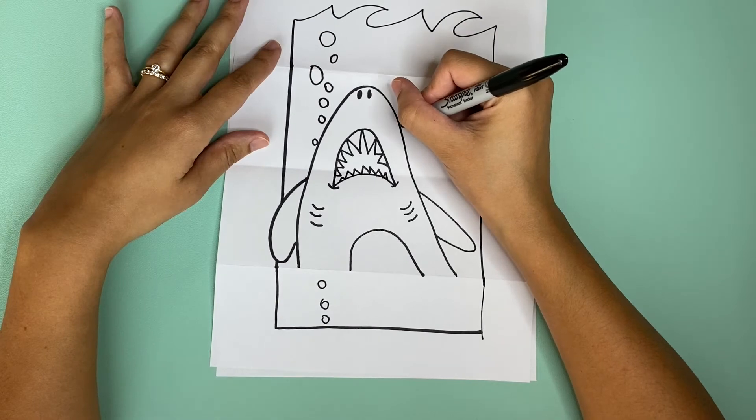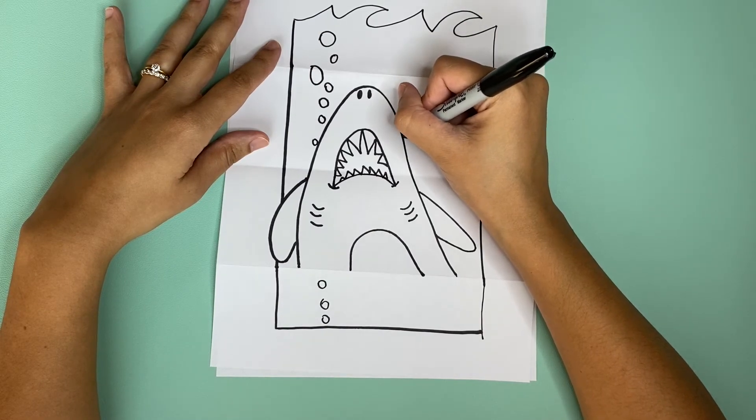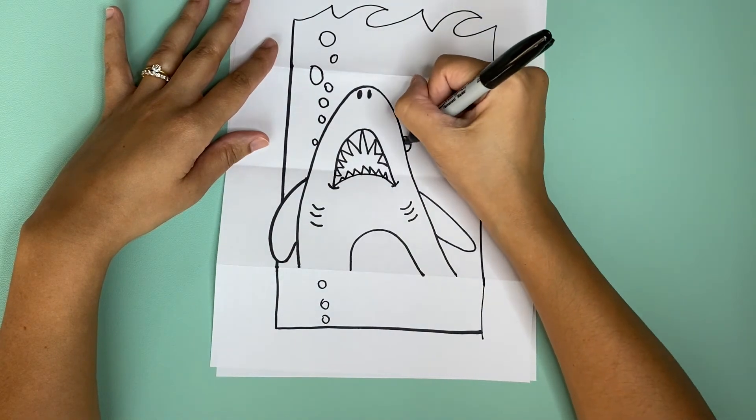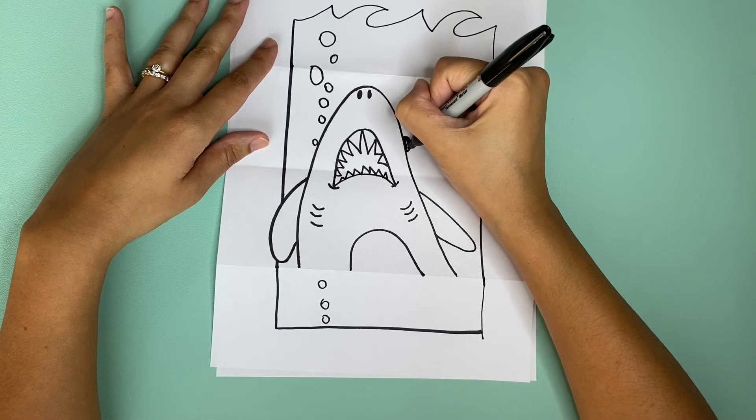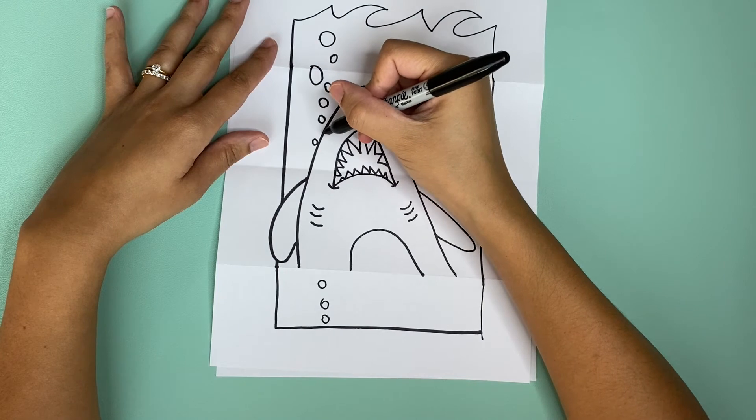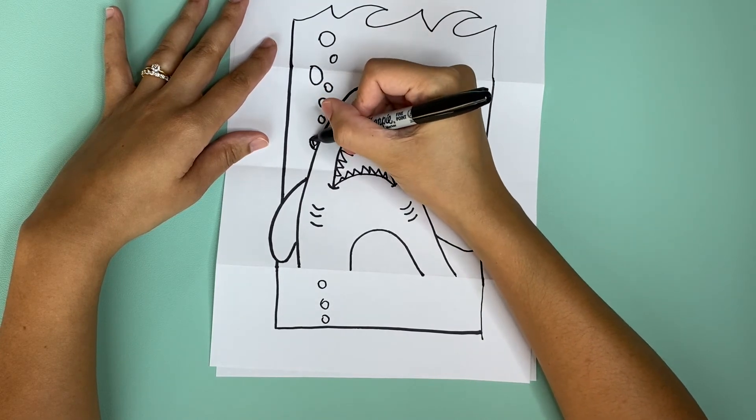Now I'm going to draw the eyes. The eyes are going to start about here and color it in, and then another one on the other side. Oops I drew a bubble there but that's okay. I'm going to draw it over the bubble and color it in.